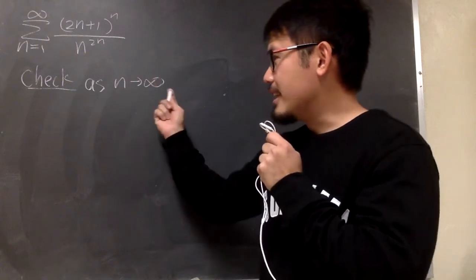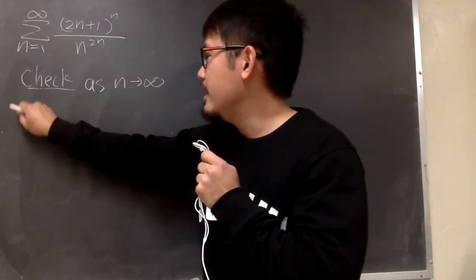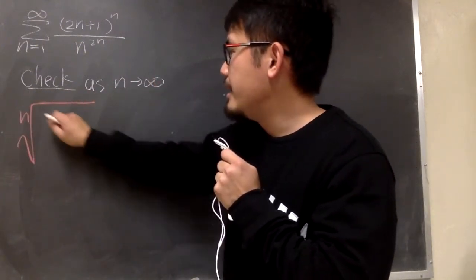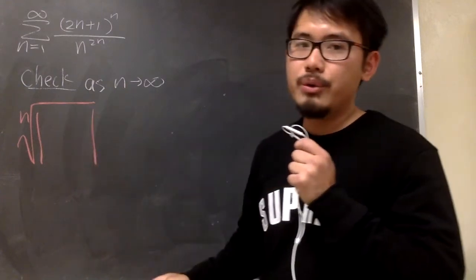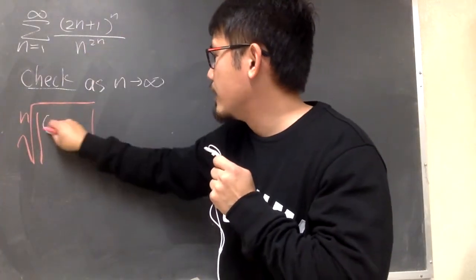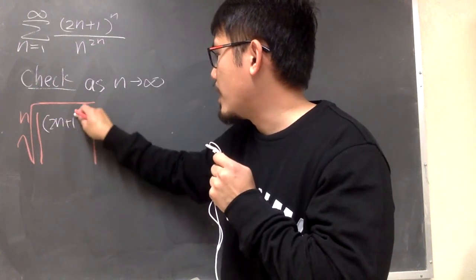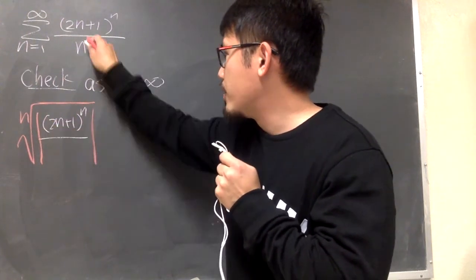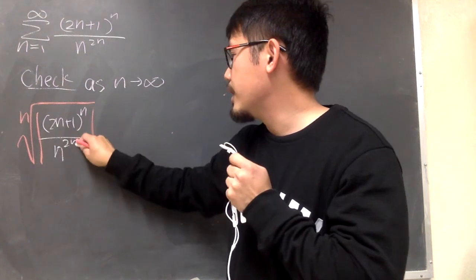Anyways, we're taking the limit, and then we have to take the nth root, and we also apply an absolute value. And then we put this inside, so we have 2n plus 1 to the nth power over n to the 2n, like this.